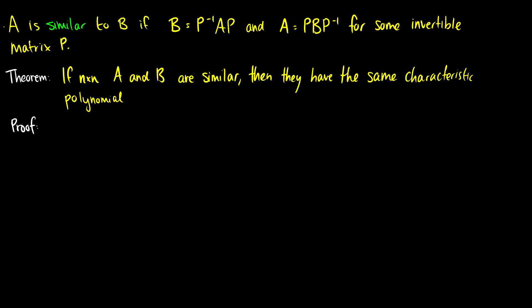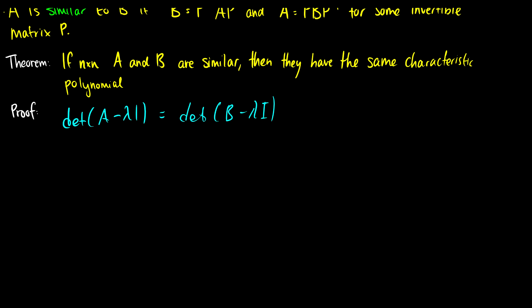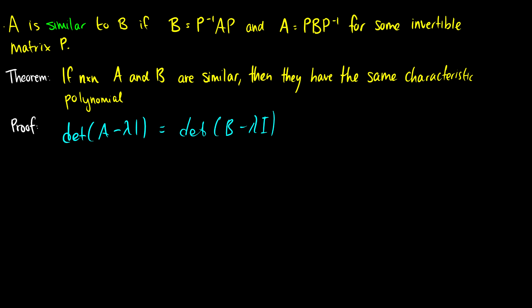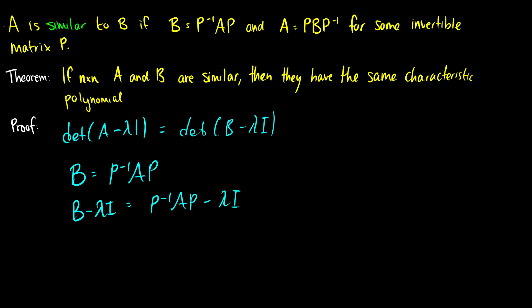What we're proving is that the determinant of A minus lambda I equals the determinant of B minus lambda I, which gives us the same characteristic polynomial. Since A is similar to B, we write B as P inverse times A times P. So when we find B minus lambda I, we're really finding P inverse AP minus lambda I.